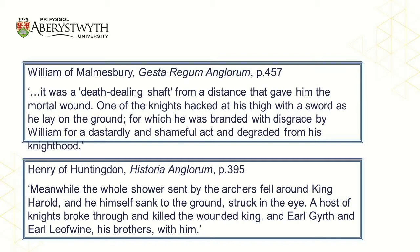What is interesting here is that both texts allege that Harold was first hit by an arrow and then attacked either by a single knight or a group of knights. William notes that attacking a warrior who was already injured was shameful, suggesting that some may have thought the Normans did not behave well towards Harold in his final moments. Could this be the reason why early Norman authors like William of Poitiers and William of Jumièges do not mention how Harold was killed? It is possible that these authors did not want to suggest that the Normans had engaged in bad behaviour during the battle.